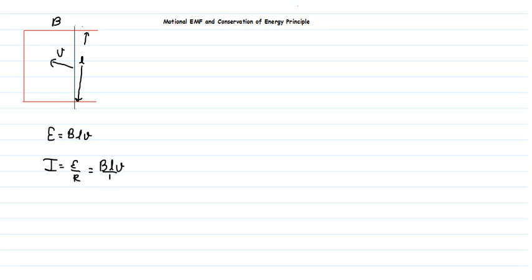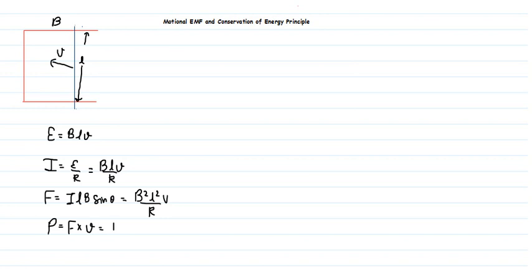The force on a current-carrying conductor in a magnetic field is ILB sinθ. In this case θ = 90°, so the force comes out to be B²L²V/R. The power supplied is force times velocity, which gives us B²L²V²/R.